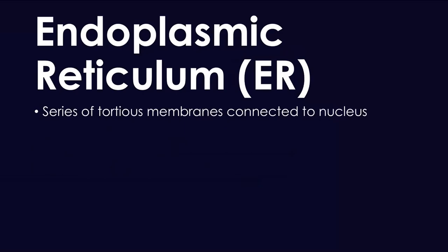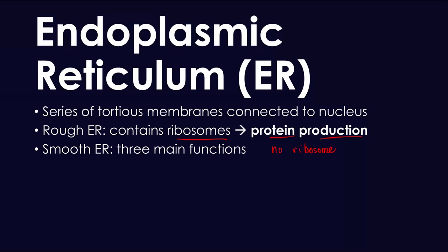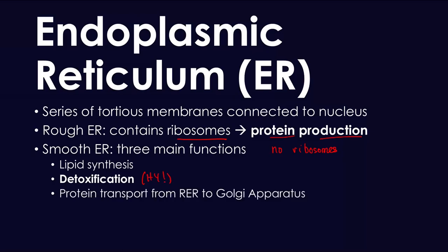The endoplasmic reticulum is a series of tortuous membranes that are connected to the nucleus — this is the only organelle connected to the nucleus. Within this organelle, you have a subdivision: the rough endoplasmic reticulum contains ribosomes, which produce proteins, so the rough endoplasmic reticulum plays a huge role in protein production. The smooth endoplasmic reticulum has no ribosomes — that's why it's called smooth. Its three main functions are lipid synthesis, detoxification — very high yield — and protein transport from the rough endoplasmic reticulum to the Golgi apparatus.